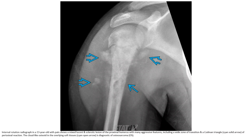Internal rotation radiograph in a 13-year-old with pain shows sclerotic lesions of the proximal humerus with soft tissue mass. Aggressive features include a wide zone of transition, a Codman triangle, and periosteal reaction.